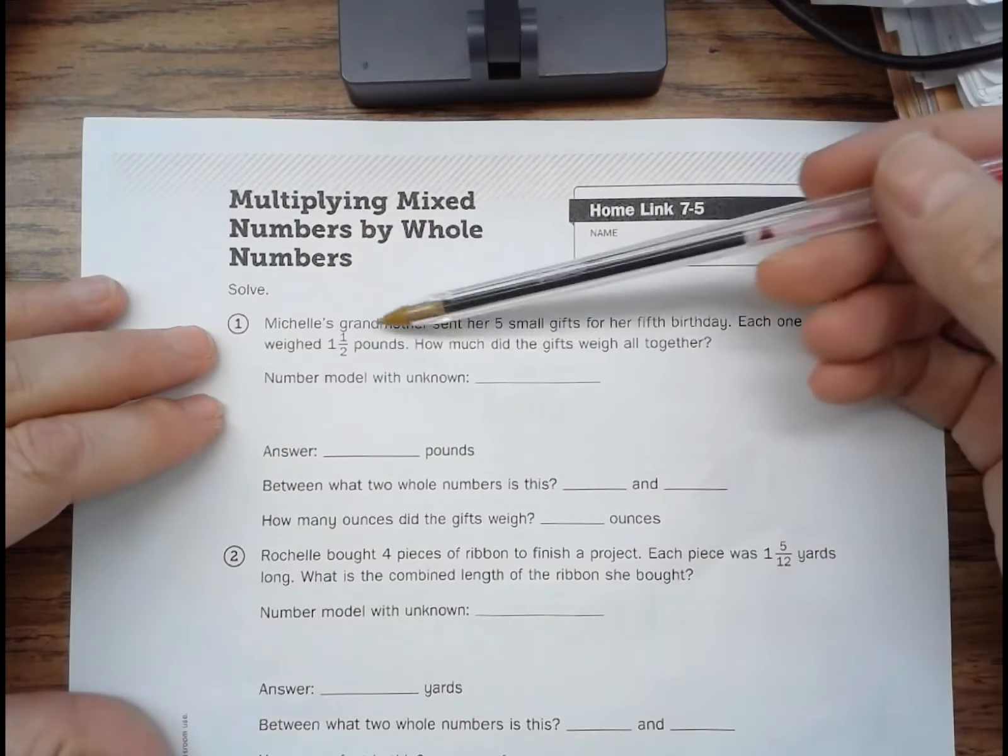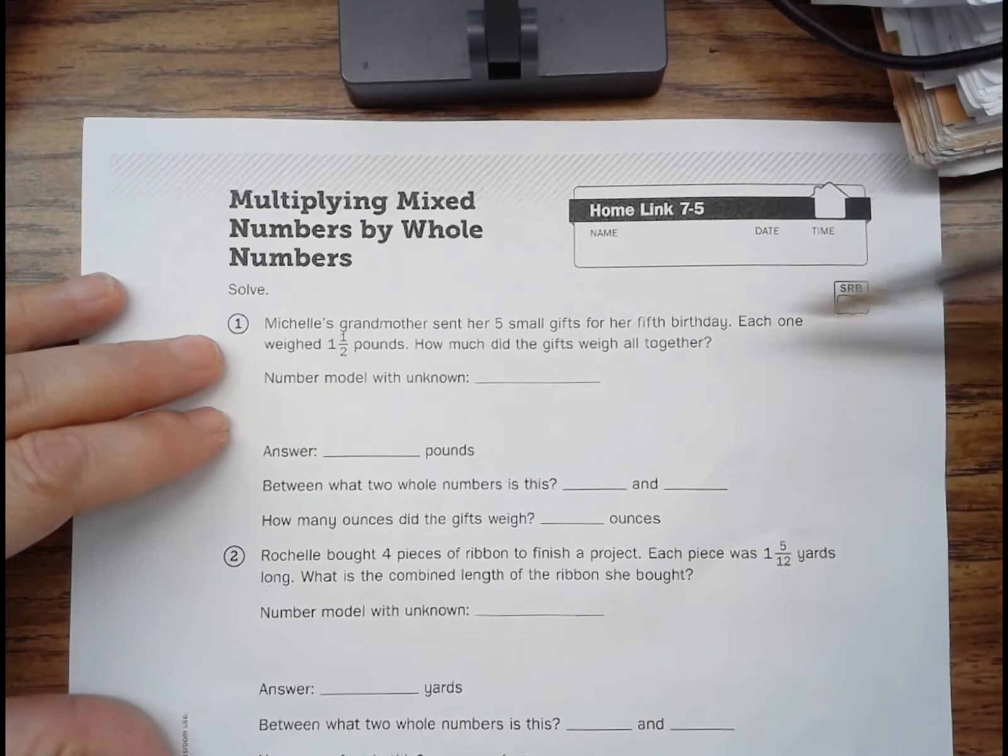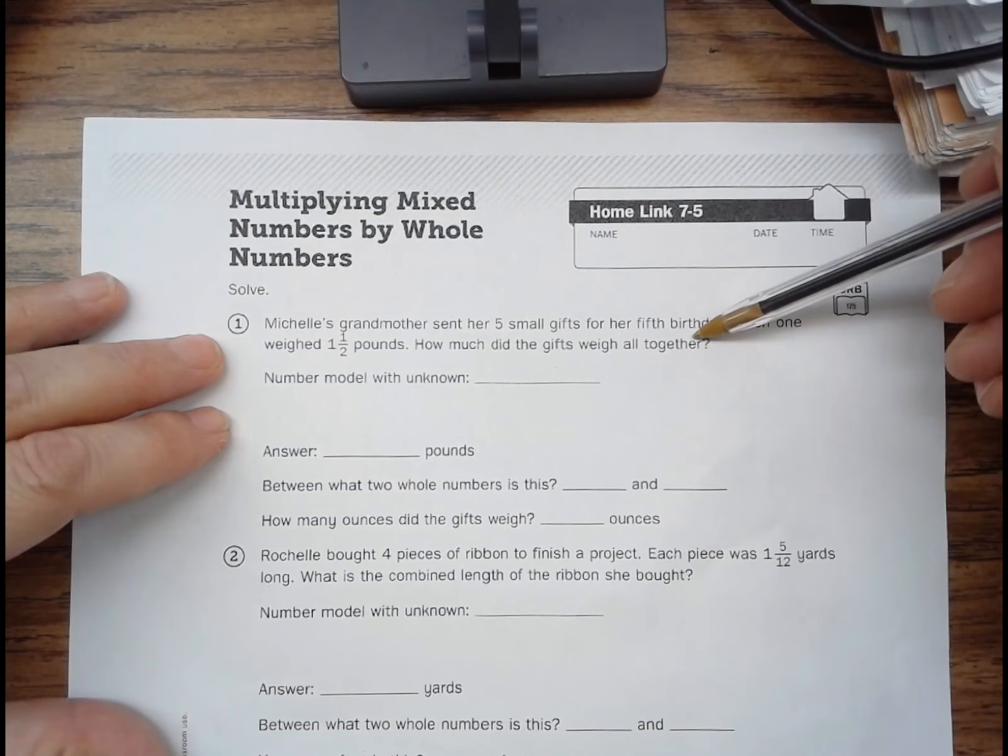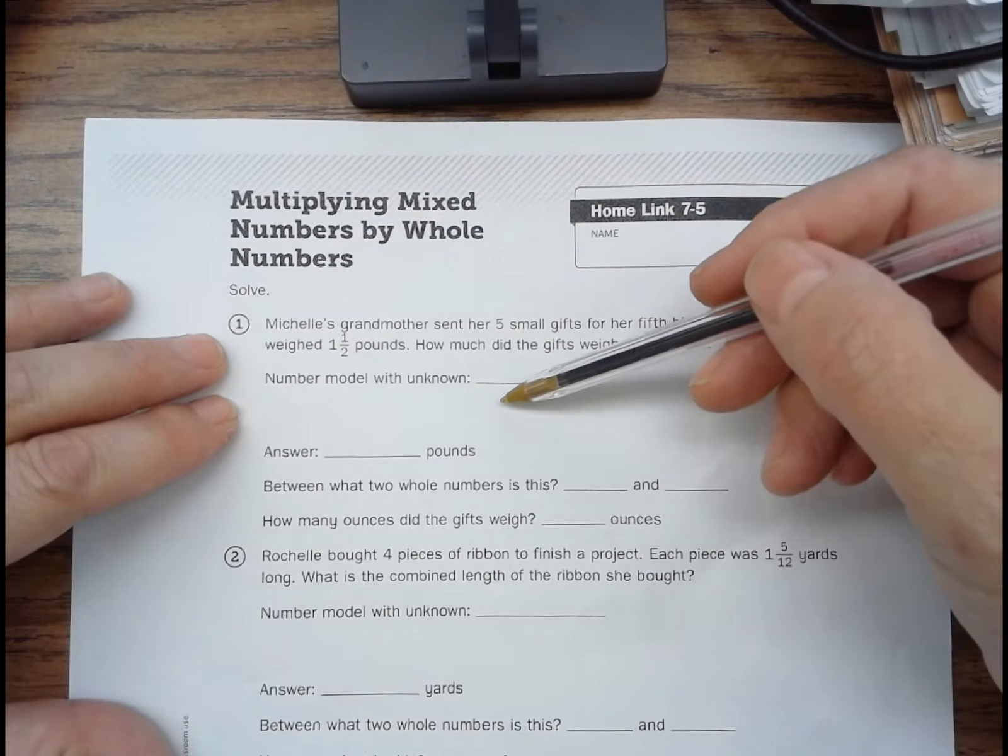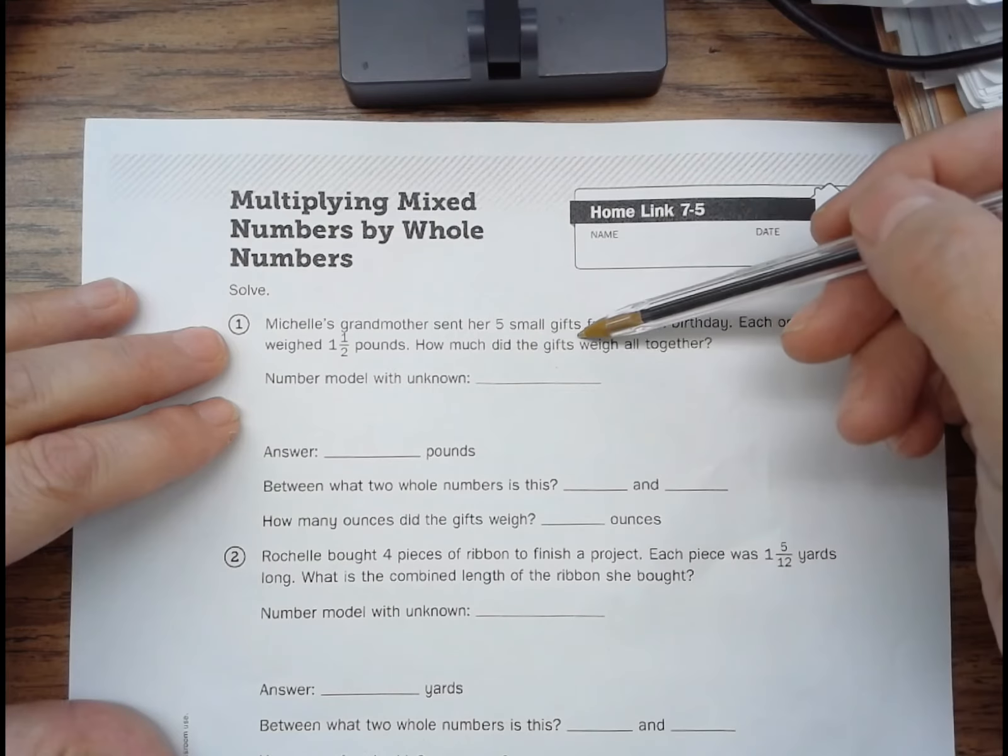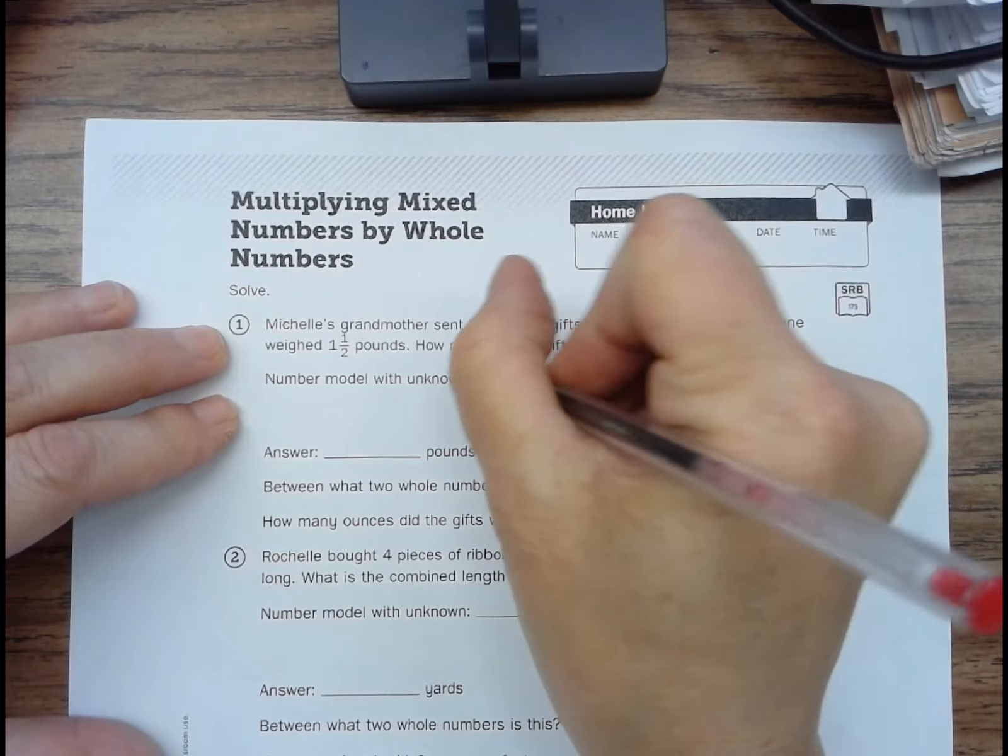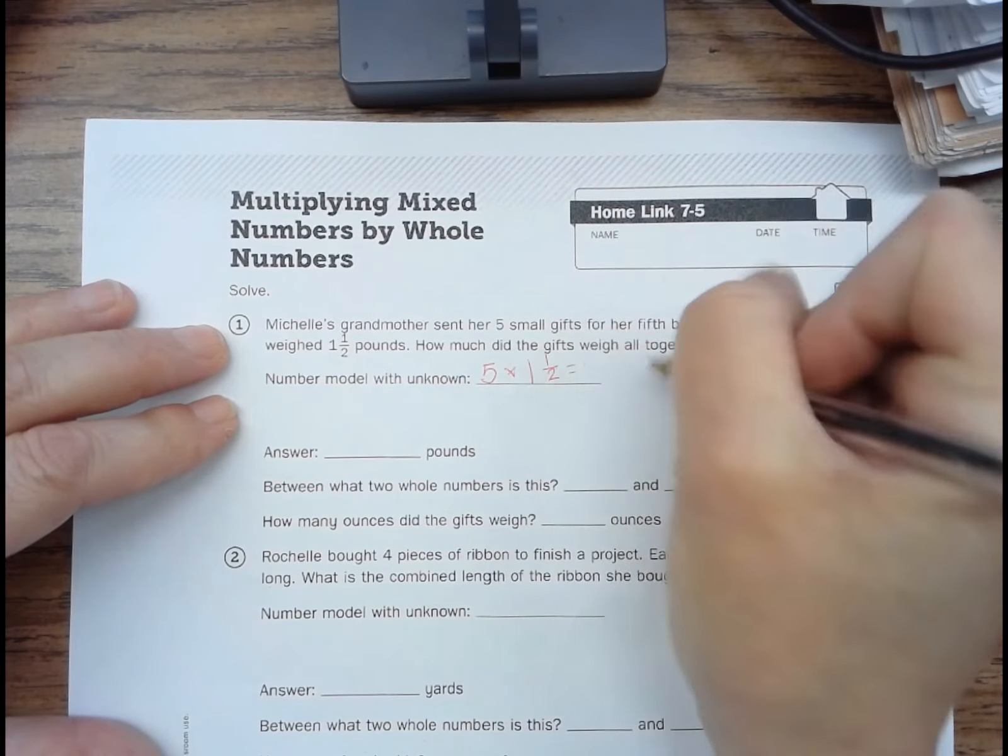So number one, Michelle's grandmother sent her five small gifts for her fifth birthday. Each one weighed one and a half pounds. How much did the gifts weigh all together? Number model with unknown. So she has five small gifts, and they each weigh a pound and a half. So we're going to multiply five times one and a half equals n.